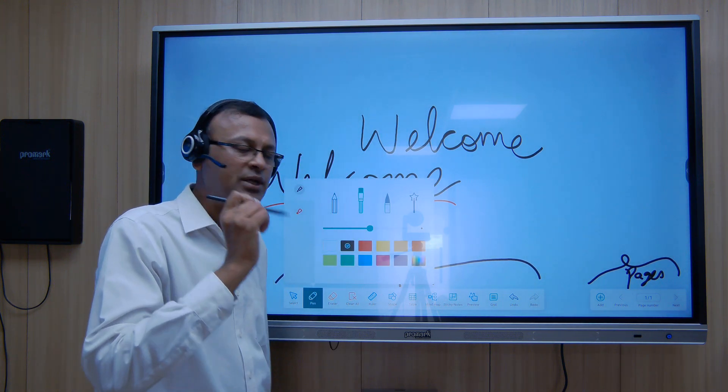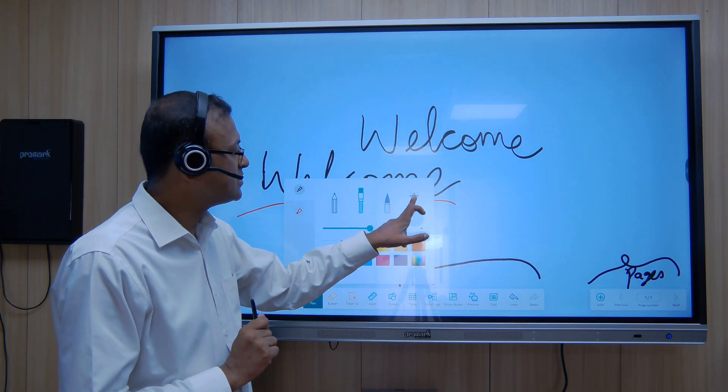This is a pointer which is like a ballpoint, small tipped one, round one. And this here is the magic wand feature. I am adding a page from here.